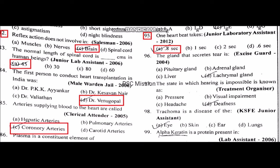The gland that secretes tears. The state in which hearing is impossible is known as deafness. Trachoma is a disease of the eye.